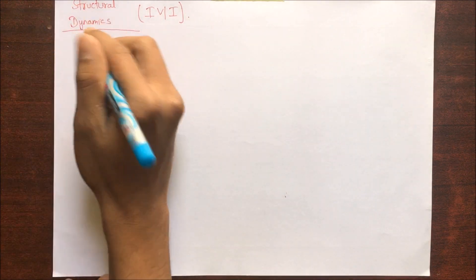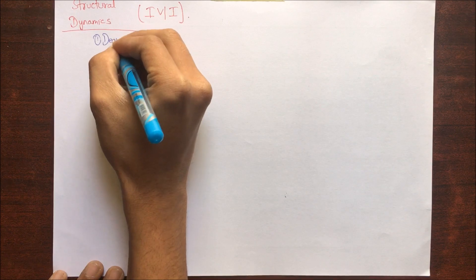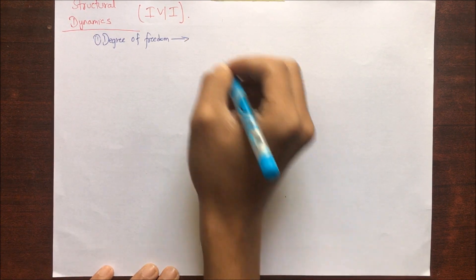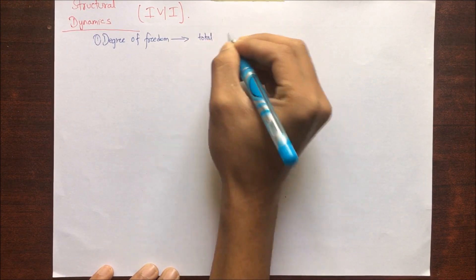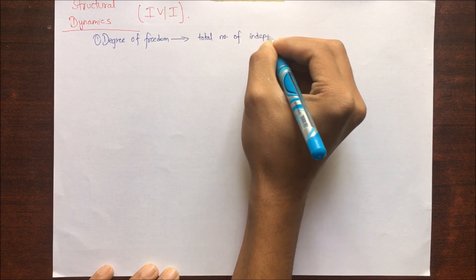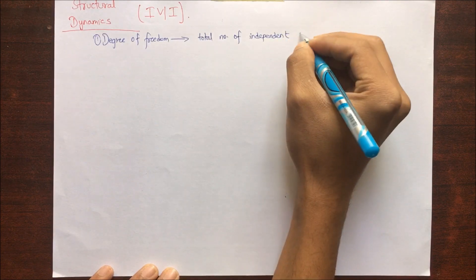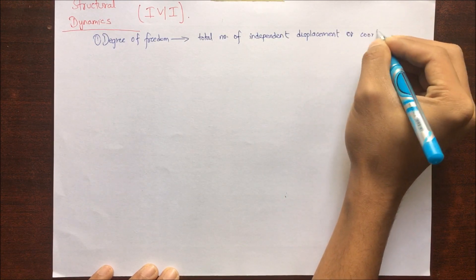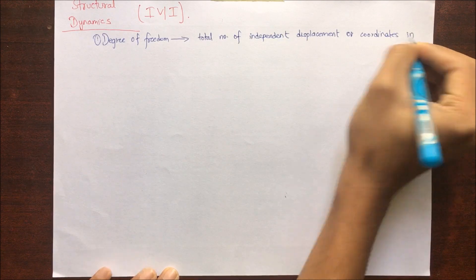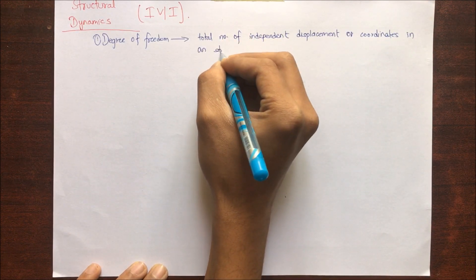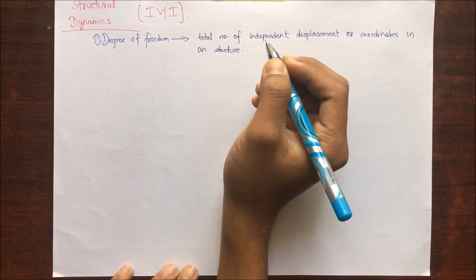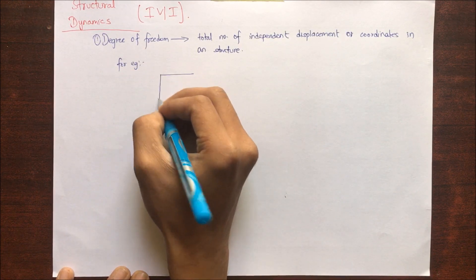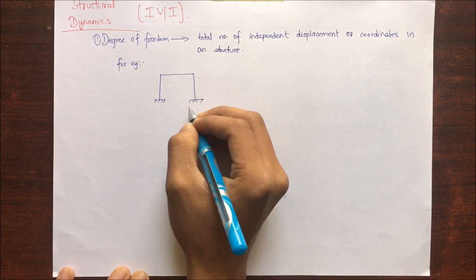Starting with the very first term: degree of freedom, which we have already discussed in various structural-related subjects like TOS 1, TOS 2, and Applied Mechanics. Degree of freedom is simply the total number of independent coordinates, or displacements, or generalized displacements of a structure or element. If we apply a force, the independent displacement that a structure can possess is simply its degree of freedom.